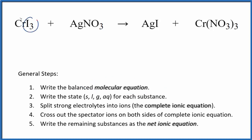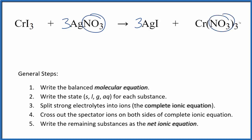I can see there are three iodine atoms here and just one here. Let's put a three in front of the silver iodide. Now the iodines are balanced — we have three silvers, so we put a three here. That fixes the silvers, but now we have three nitrates. That's okay because we have three nitrates over here. So this is the balanced molecular equation.